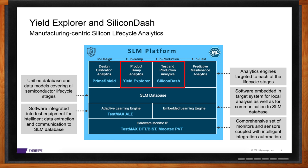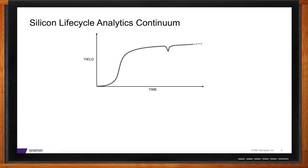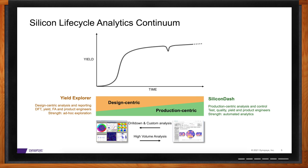How do Yield Explorer and Silicon Dash fit into our design timeline? Both Yield Explorer and Silicon Dash are used from the beginning of new product introduction, then through yield ramp, and then finally into high-volume sustaining. But the value and usage of the two tools change over time. Yield Explorer is the more design-centric and flexible tool — it really excels when you have a self-contained, specific data set that you want to deep dive. It's meant for exploration of test data.